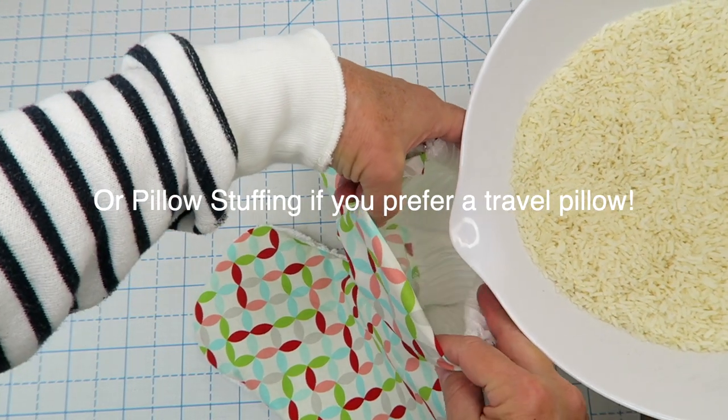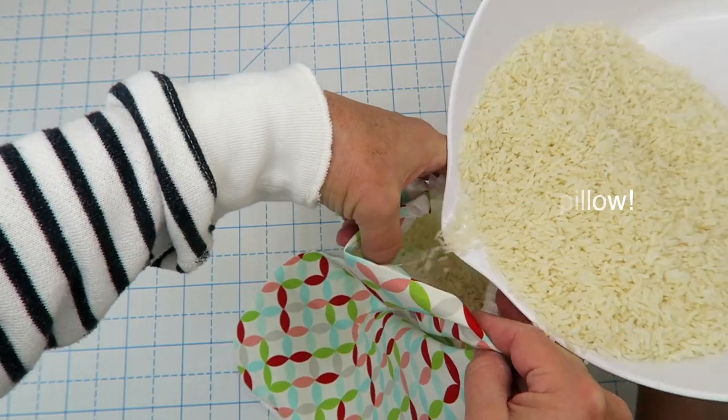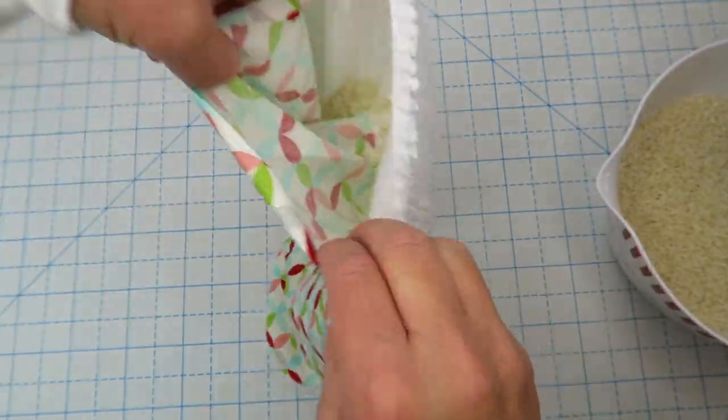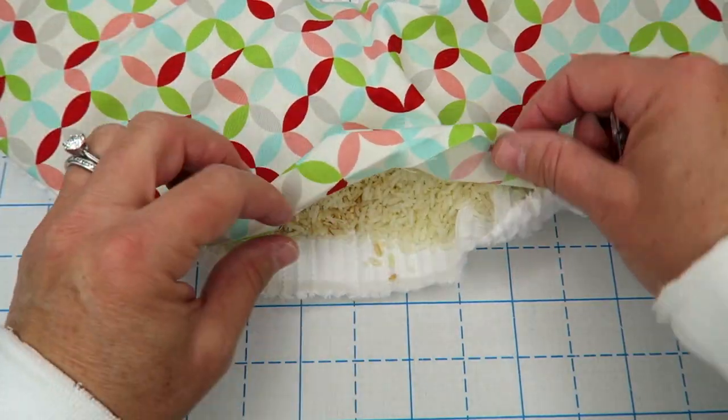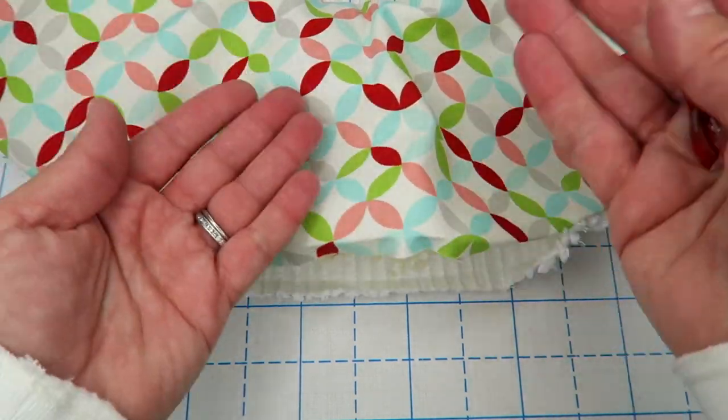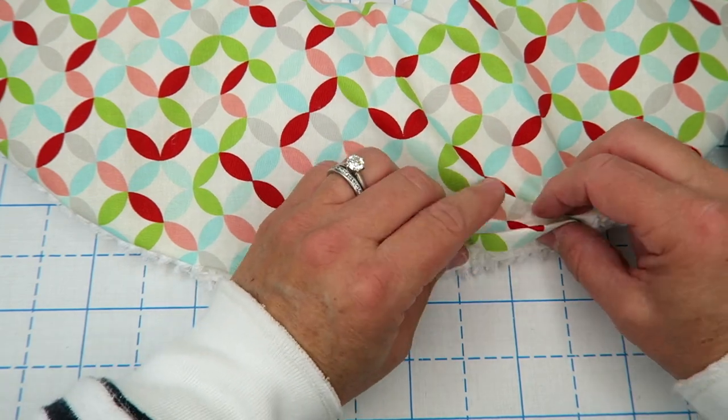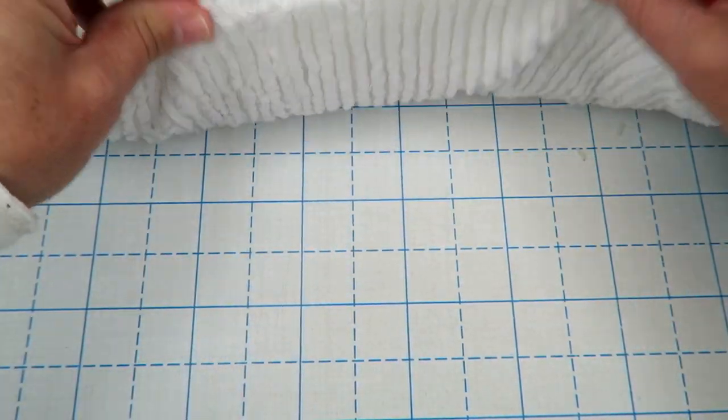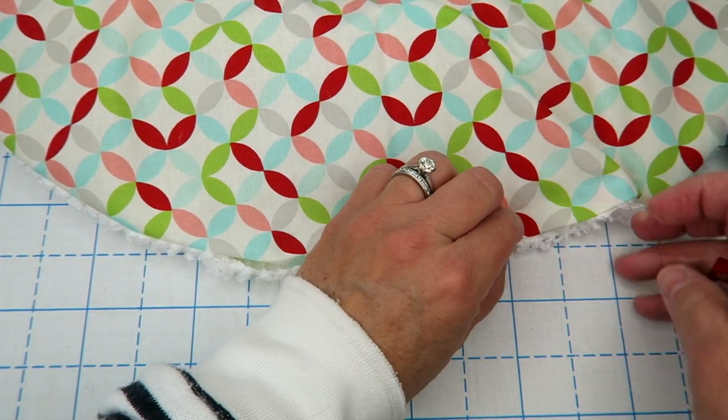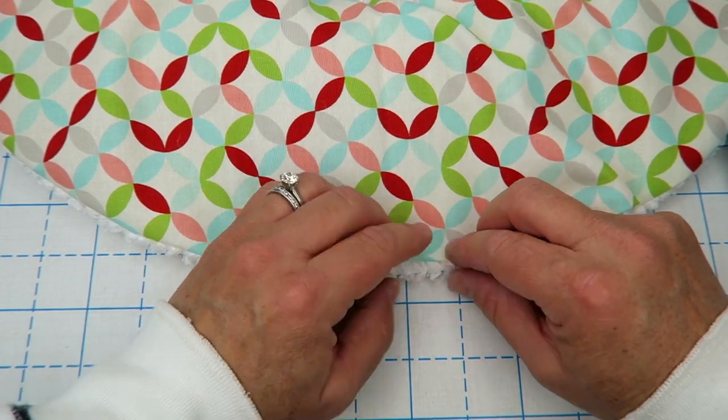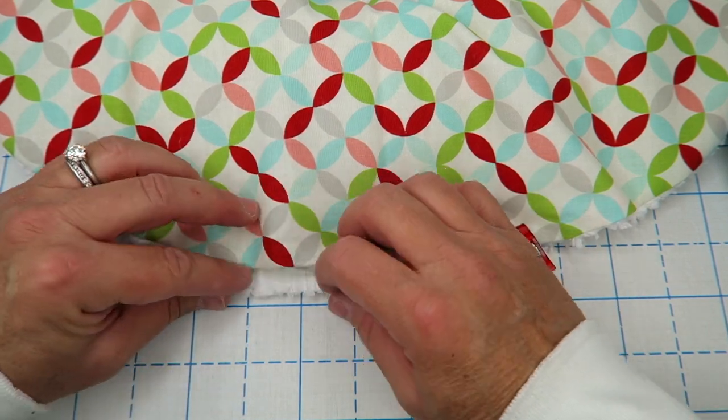Next we're going to go ahead and pour our rice into our heating pad here very carefully. Now that we've got all our rice inside, and by the way don't overfill this, you want it to be kind of pliable so it can mold to your body. We're going to go ahead and just pin these in place and I'm going to shake the rice away from this edge here so that we can sew it. Then I'm going to go ahead and clip it in place so that I can hold it all together, and then we'll take it over to our sewing machine and we'll just sew up this opening here and then we'll be done.